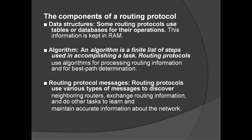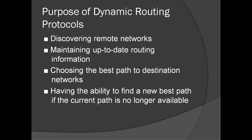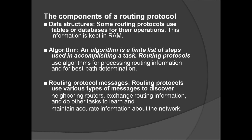The third component is routing protocol messages. Routing protocols use various types of messages to discover neighboring routers, exchange routing information, and do other tasks to learn and maintain accurate information about the network. Periodically, routers update one another so that if there are changes on the network infrastructure, other routers will know about any existing new paths. So the three components are: data structures, algorithm, and routing protocol messages.